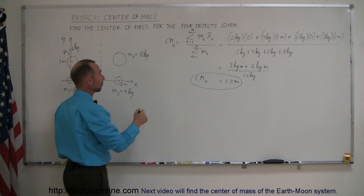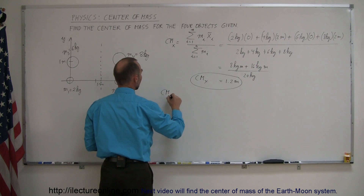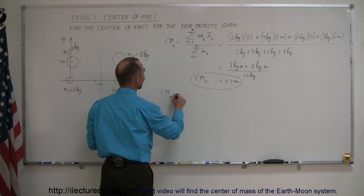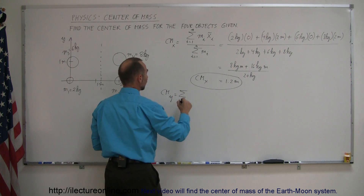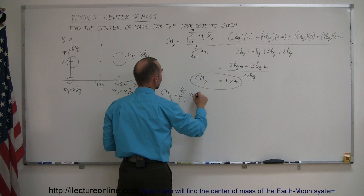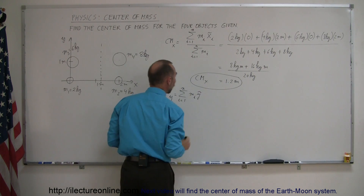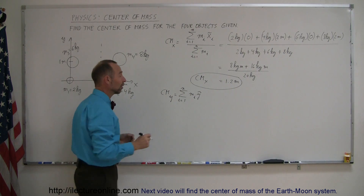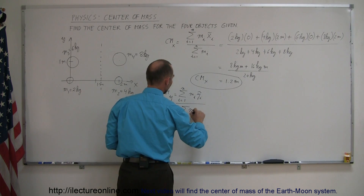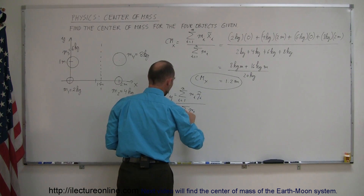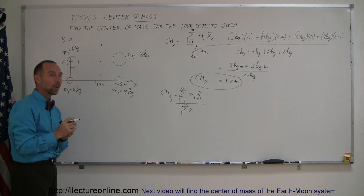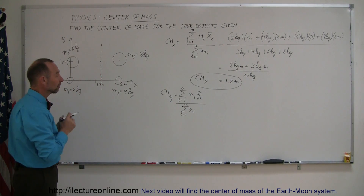Now doing everything again for the y-direction: the y-coordinate of the center of mass is equal to the sum from i equals 1 to n of all the masses times the y-coordinate of the center of mass of each of those, divided by the sum of all the masses from i equals 1 to n. We're going to multiply each mass times the y-coordinate of the center of mass of each.